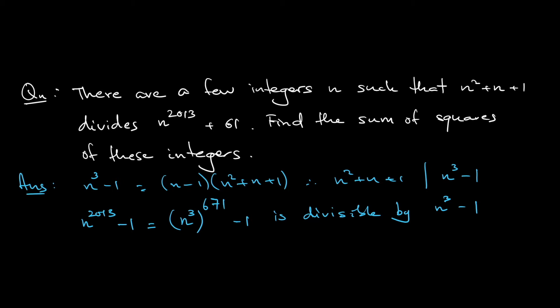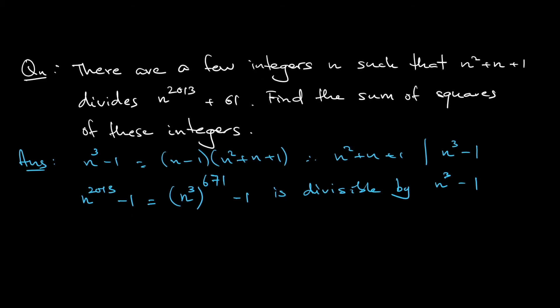So let me erase this. n^2013 - 1 is divisible by n³ - 1. n³ - 1 further is divisible by n² + n + 1. So, that means that n² + n + 1